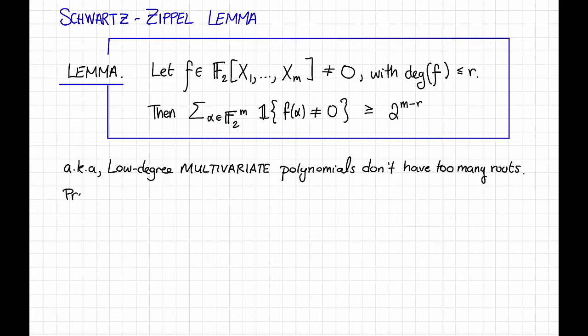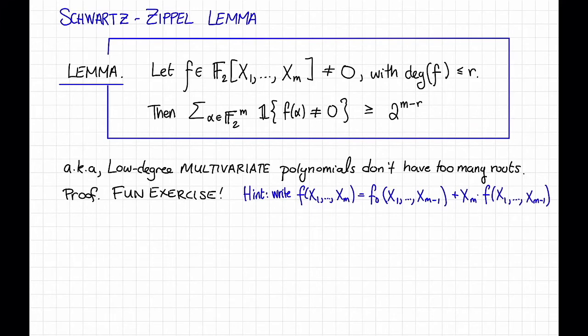For the proof, well, we're going to skip the proof but it's a fun exercise. As a hint, show that you can write F like this for some M minus 1 variate polynomials F0 and F1, and then use induction on M.